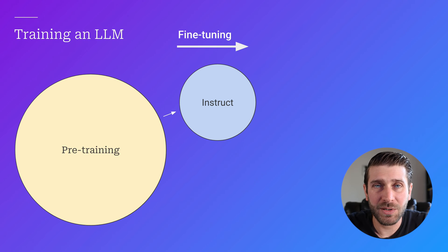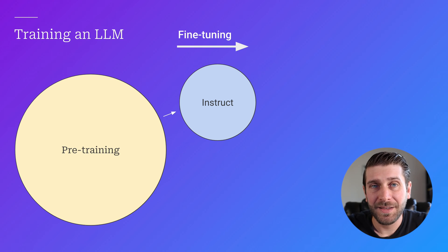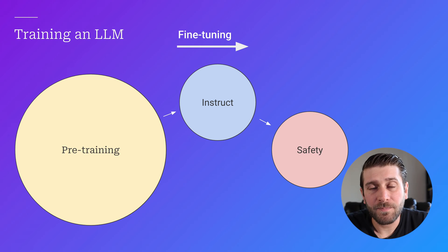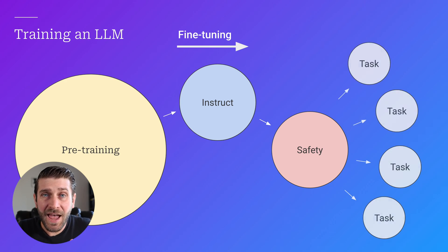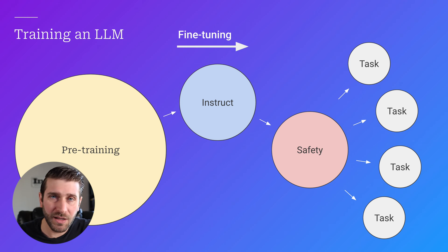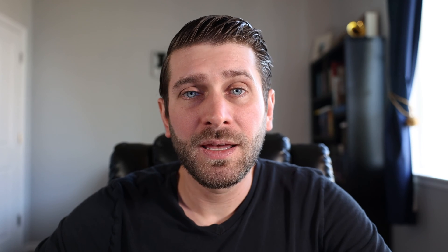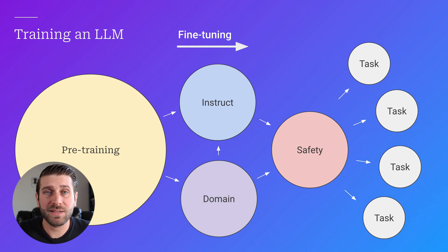Pretty much everything after pre-training is fine-tuning. Once we have a base model trained on a lot of text, we do fine-tuning. We often do instruct-tuning — this is how we get chat models like ChatGPT. After instruct-tuning there's safety-tuning, which tries to prevent the model from doing things you don't want it to do. From there, we can further fine-tune models for very specific tasks, or do domain fine-tuning to make the model better at something like law or finance. The possibilities for fine-tuning are unlimited.